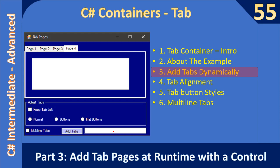The user will specify the tab name, then click the add tabs button, and the tab will get added with that name. For example, if there is already a page 4 and you type page 4 again, a new tab will get added at runtime. When adding the tab, we will add a tab page with a control — specifically a text box added at runtime — and then add that tab page to the tab control container.